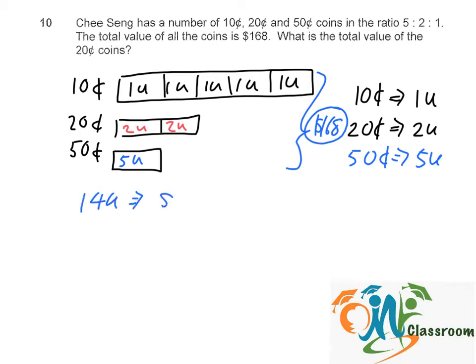14 units equals to $168. So one unit equals to $168 divided by 14, which equals to $12. So what is the total value of the 20 cents coins?